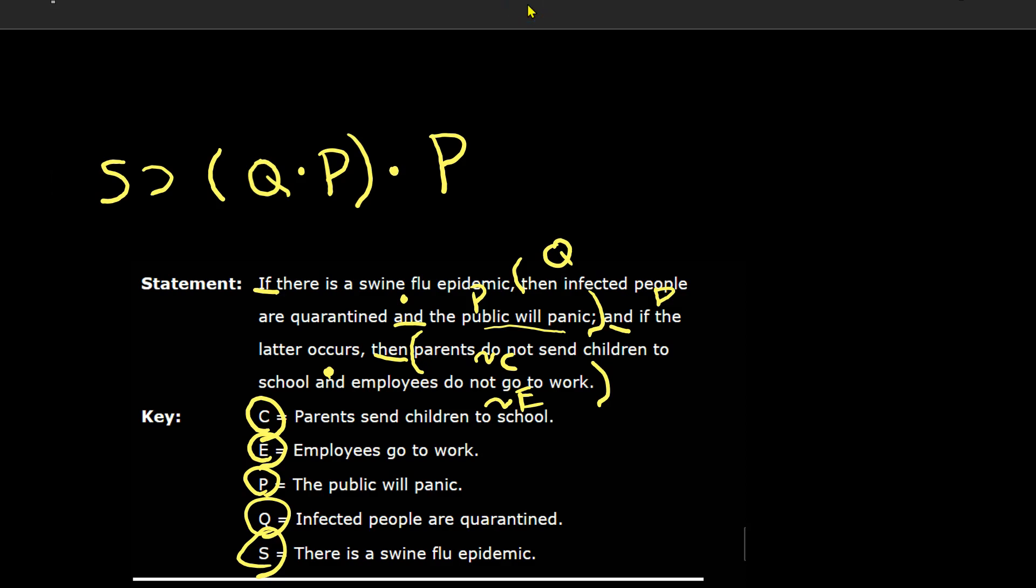So we have and if the latter occurs, that was P, then parents do not send children to school, that means not C, and it's not the case that employees go to work either. And these are taken as a unit. So that means these will be within parentheses. It's always a bummer when you have a C used in one of these because a C is so easily confused with a parentheses. So I'm just going to put a line here to indicate that this is a C as a letter rather than a parentheses.